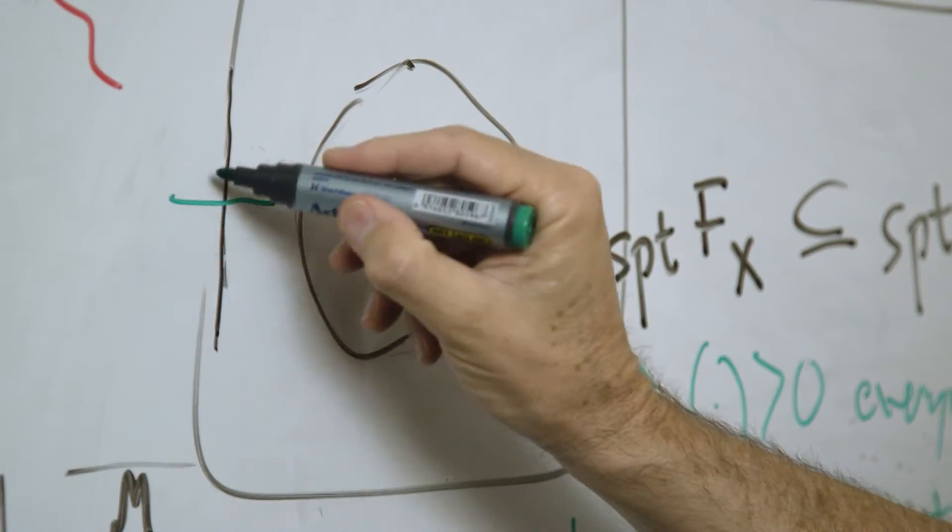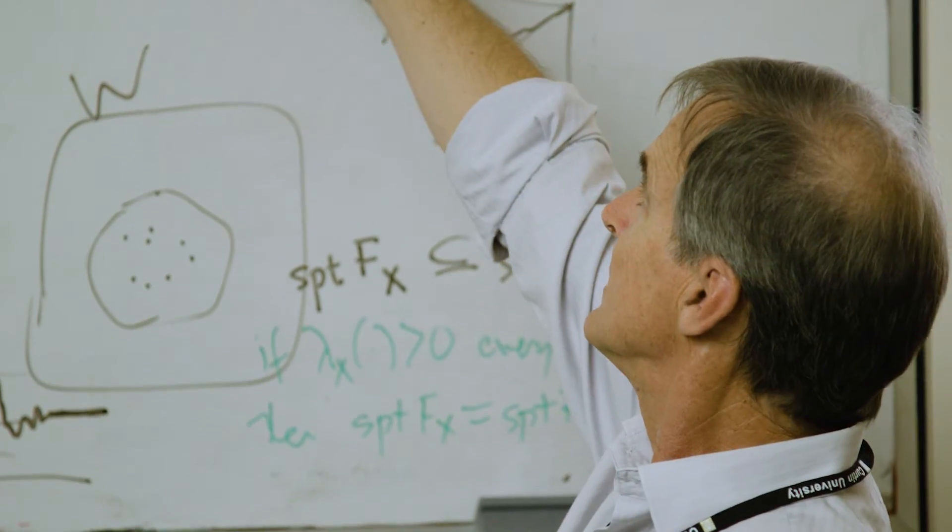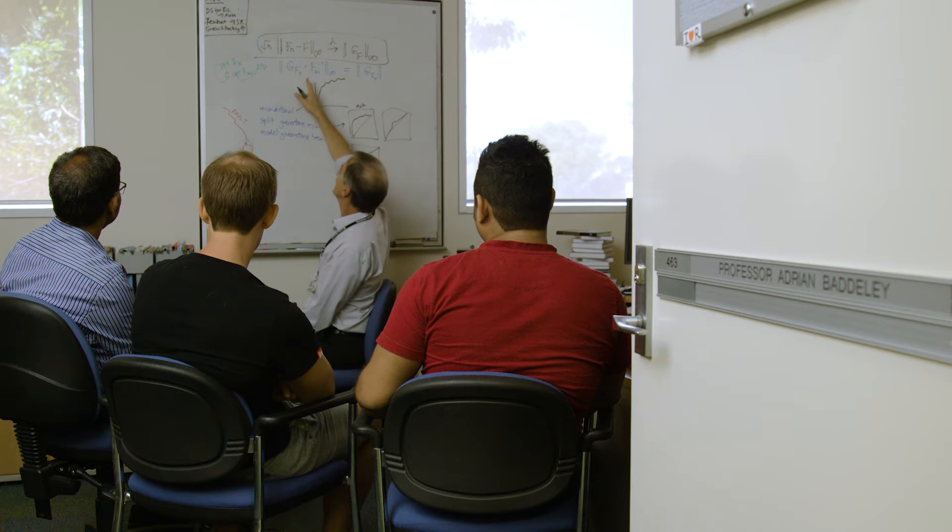Now we want to know if there's a pattern. Is there a cluster of cancer cases? Where's the best place to dig for gold? Is the universe homogeneous on a large scale?